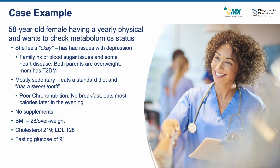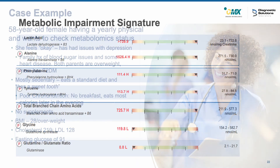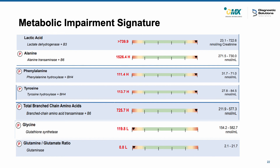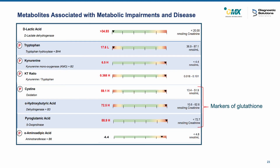Here is a case example of a 58-year-old woman who is having a yearly physical and wants to check her metabolomic status. Metabolomics can be used to identify concerns in several health conditions, but researchers also recommend checking metabolomic status when you're healthy so you can compare against it as you age. Given her family history, I would start by looking at markers associated with metabolic impairments: lactic acid and alanine, phenylalanine and tyrosine, individual and total branch chain amino acids, glycine, and the glutamine-to-glutamate ratio. Everything is in the wrong direction here, and I would consider this high risk. Additional markers I'm also going to review are D-lactic acid, the KT ratio, markers of glutathione, and alpha-amino adipic acid.